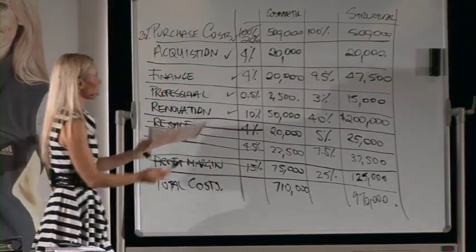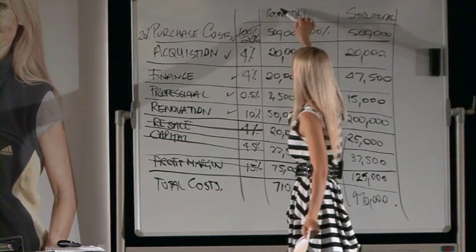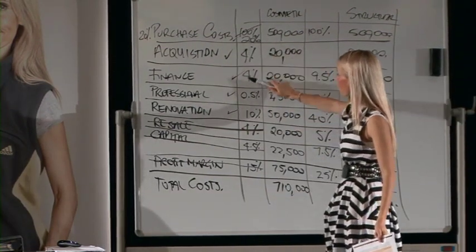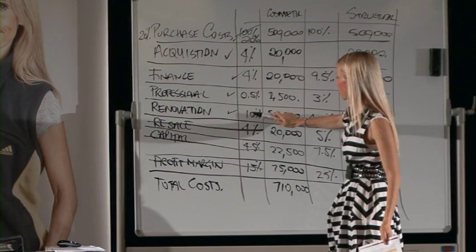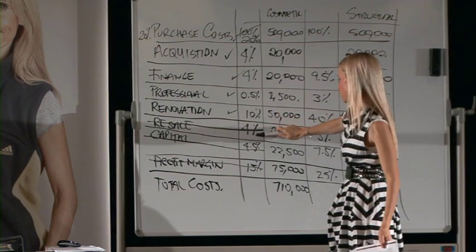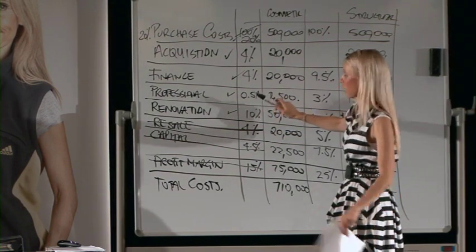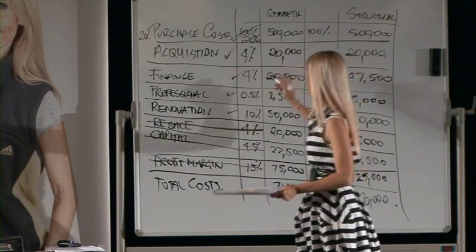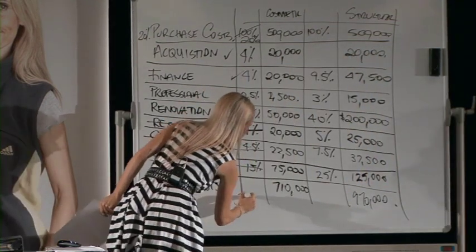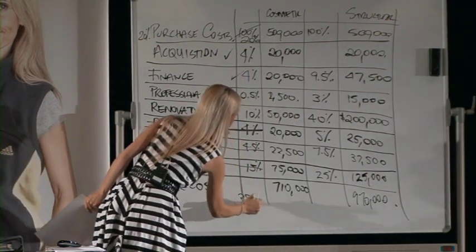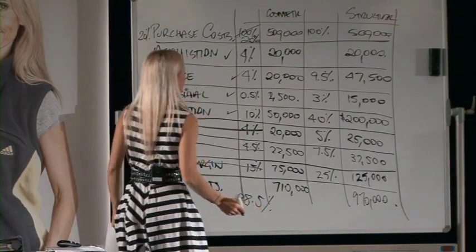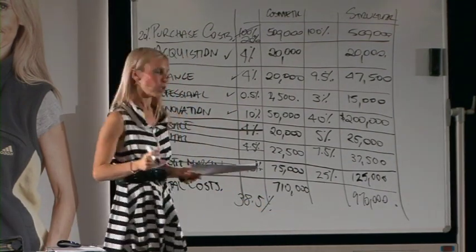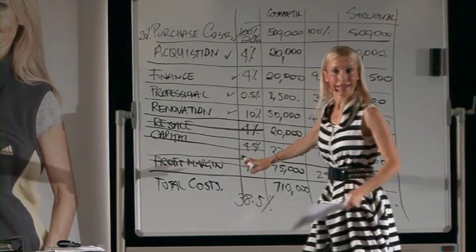So if you look at that, for a cosmetic renovation you've got: 20% deposit, 24%, 28%, 28.5%, 38%, 38.5% — all right? So what it says is that you've got 38.5% in costs that you need to cover. Now, what you look at is your cash. Does everybody understand that?